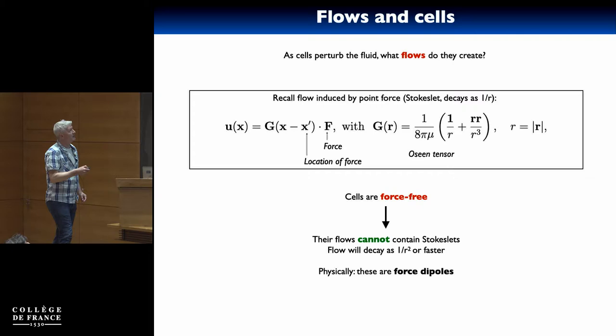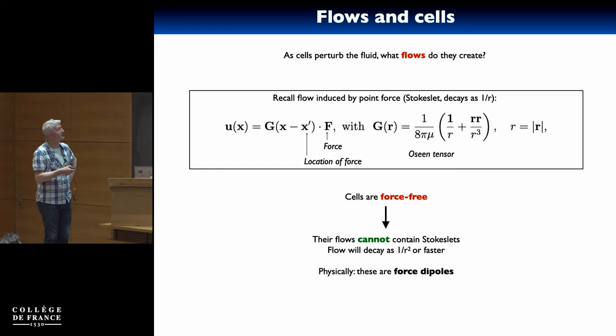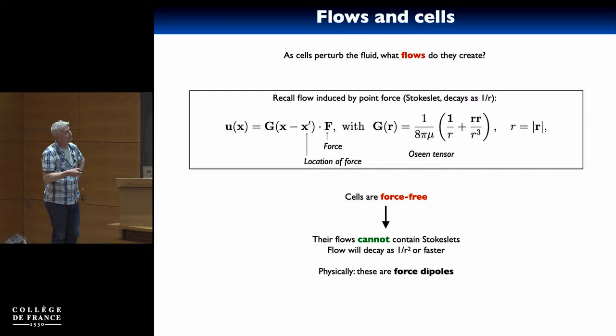Now cells cannot apply a force — they're force-free, and they're also torque-free. As a result, their flows generically cannot contain a Stokeslet. If I measure a flow, it cannot have a 1/r component, because that 1/r would be a signature of a force applied to the fluid. So everything I do will have to kill the Stokeslet component. That means the flows can only behave as one extra power — a gradient of 1/r — so the flows will always decay like 1/r². The reason is that you don't have a net force, but you have a first moment of a force: a force dipole, something very generic.